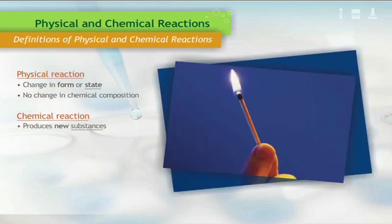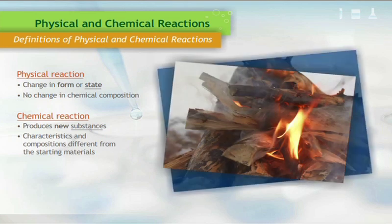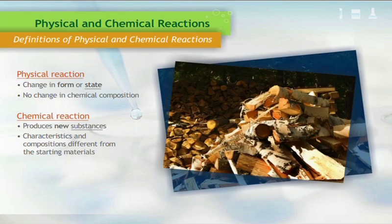A chemical reaction produces new substances with characteristics and compositions which are different than those of the starting materials. An example of a chemical reaction is burning. Fire comes from a chemical reaction between oxygen in the atmosphere and some sort of fuel, such as wood.